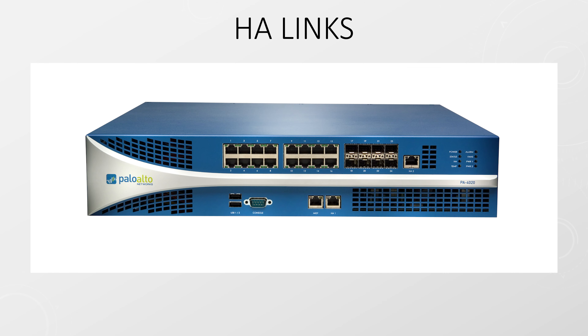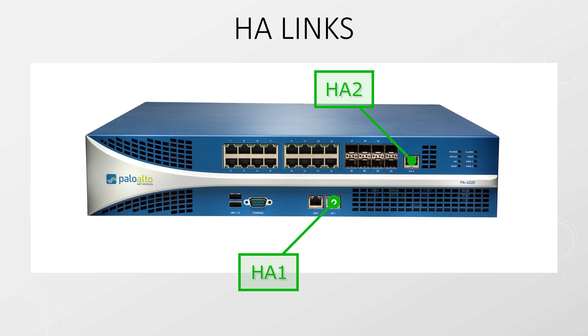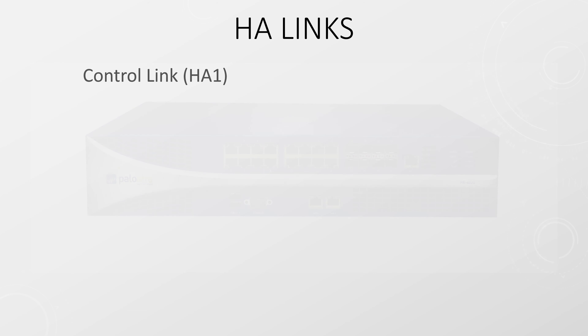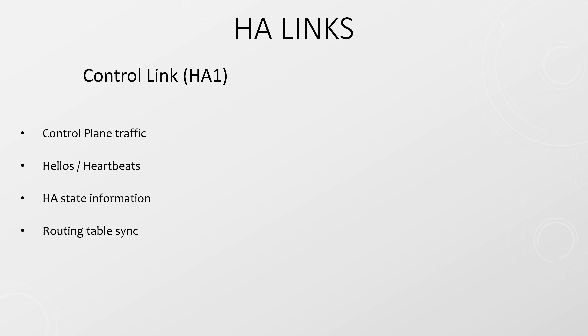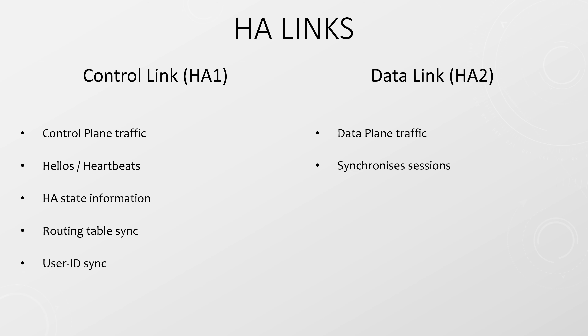When configuring an HA pair, it is mandatory to configure a few special links between the two firewalls. Most Palo Alto firewalls come with dedicated ports for this. In this model, we have the dedicated HA1 and HA2 ports. HA1 is called the control link, which exchanges control plane traffic between the two firewalls. This includes heartbeat messages, HA state information, routing table synchronization, and user ID. HA2 is the data link, used for sharing data plane traffic, including synchronizing sessions, forwarding tables, IPsec tunnel information, and ARP information.